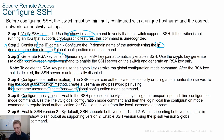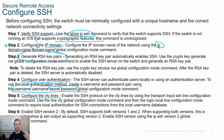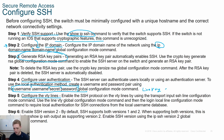Then configure the VTY lines. Unlike the console which uses 'line con 0', SSH uses 'line vty 0 15' — giving you 16 total lines. Different vendors may have more or fewer VTY lines, but for labs we typically use 0 through 15. Enter that range with the command 'line vty 0 15'.